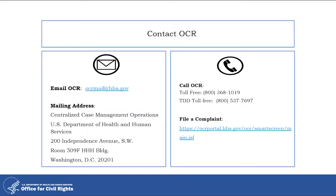Email OCR at OCRmail@HHS.gov. Mailing address: Centralized Case Management Operations, U.S. Department of Health and Human Services, 200 Independence Avenue SW, Room 509F, HHH Building, Washington, DC 20201. Call OCR toll-free at 800-368-1019 or TDD toll-free at 800-537-7697. To file a complaint, visit https://ocrportal.hhs.gov/ocr/smartscreen/main.jsf.